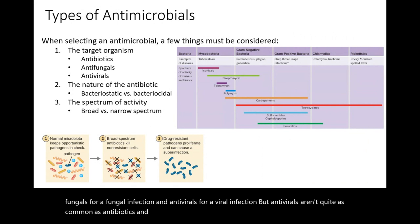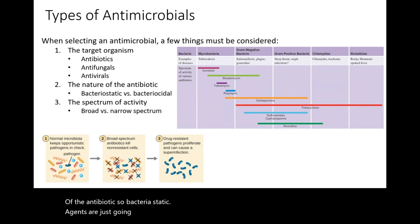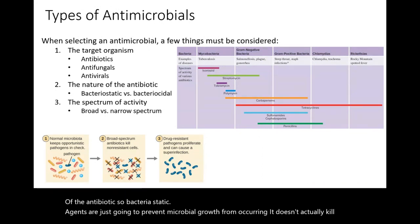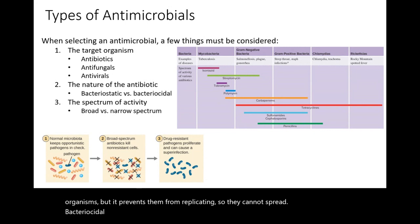You should also consider the nature of the antibiotic. Bacteriostatic agents prevent microbial growth — they don't actually kill the organisms but prevent them from replicating so they cannot spread. Bactericidal agents, on the other hand, actually kill existing bacteria.